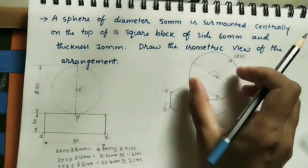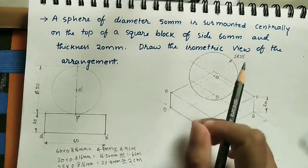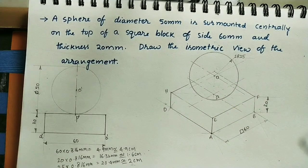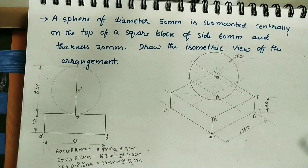This is the method of doing the isometric view for the sphere which is mounted centrally on the square block. If you like this lecture, hit the like button, subscribe to my channel, and share with your friends. Thank you for watching.